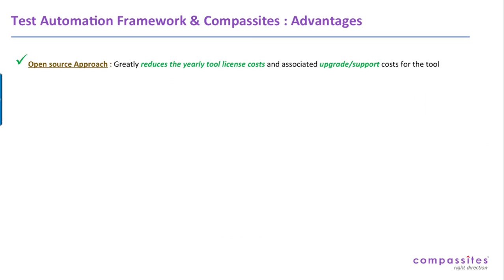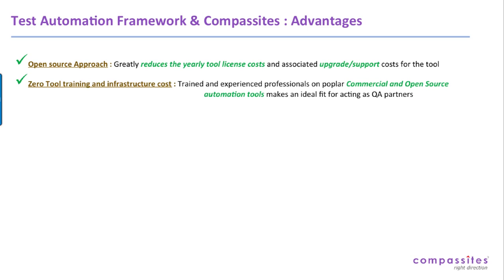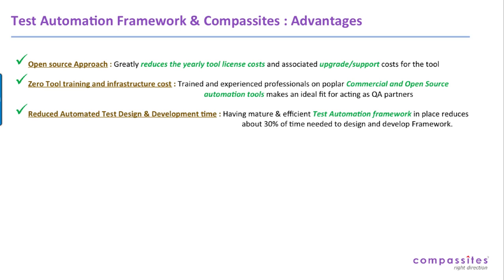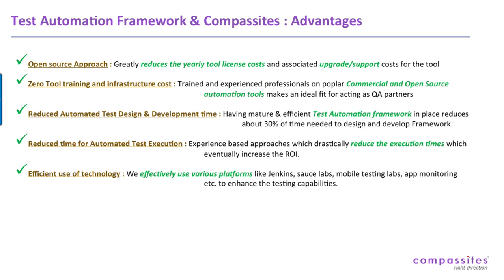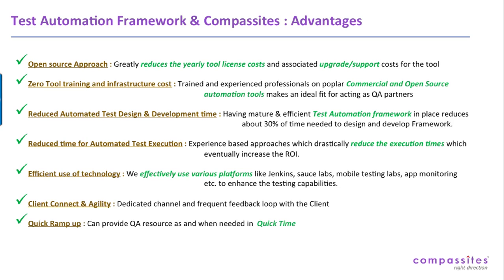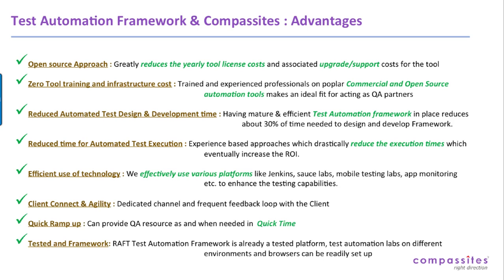The advantages of RAFT and Composites: we predominantly work on an open source approach, which greatly reduces cost — upgrade cost, support cost, etc. Using RAFT results in near-zero training and infrastructure cost. Composites provides test labs so clients can execute tests on our lab. We see a 30% to 40% reduction in framework development time. We integrate Jenkins, Sauce Labs, mobile testing labs, app monitoring tools, etc., into RAFT for real client value. We can quickly ramp up resources, and RAFT is a tested, stable framework used across many projects. Thank you very much — also visit our RAFT execution video and parallel execution video.